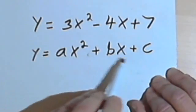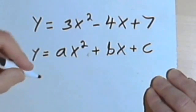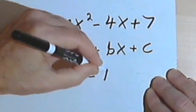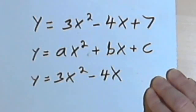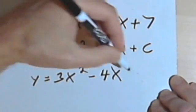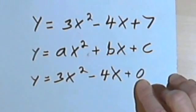Now, the b and the c could also be zeros. So in other words, if I had y equals 3x squared minus 4x, then that would be like saying y equals 3x squared minus 4x plus zero. So there is a c, it's just zero.